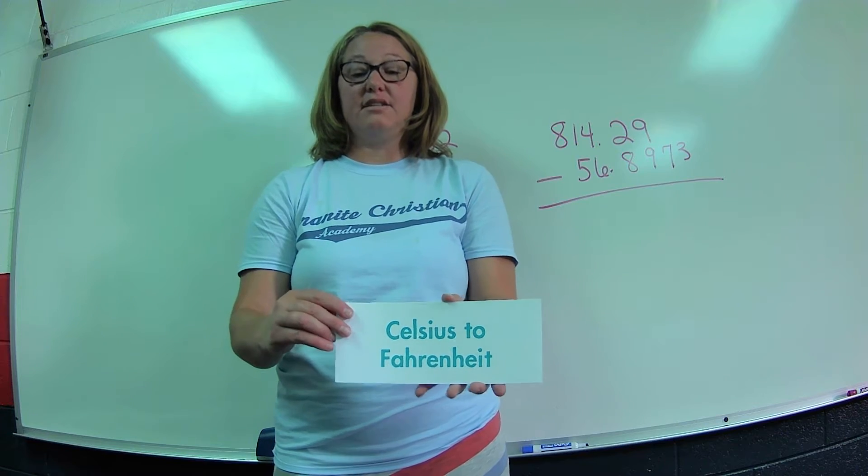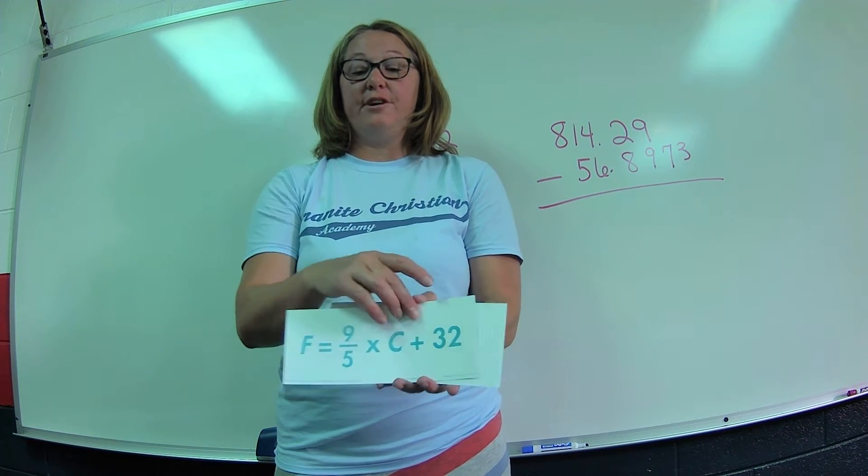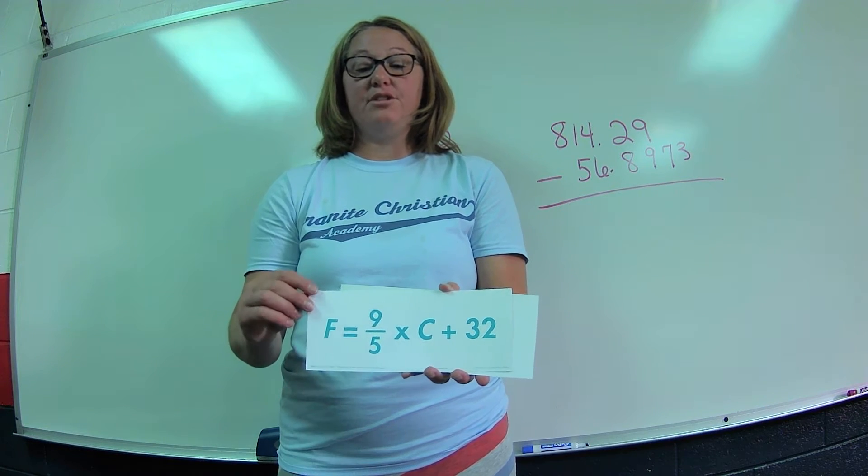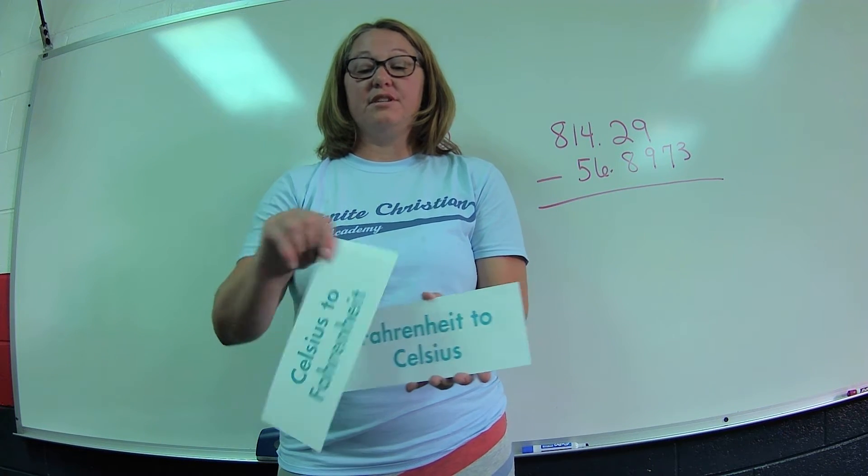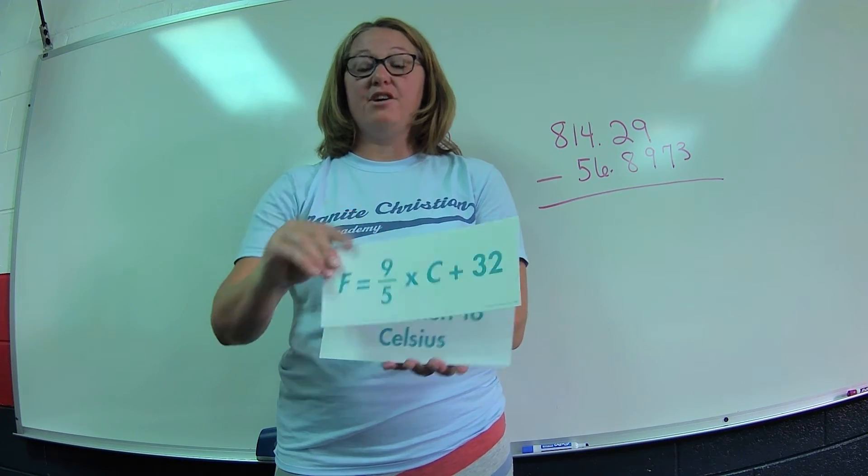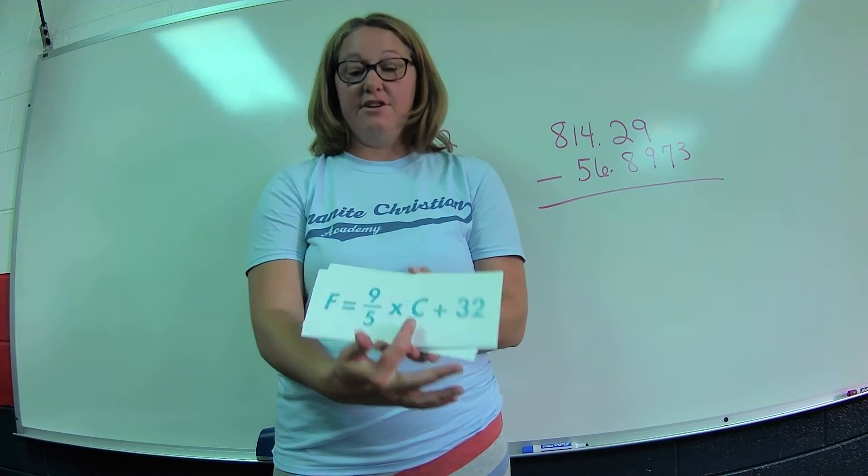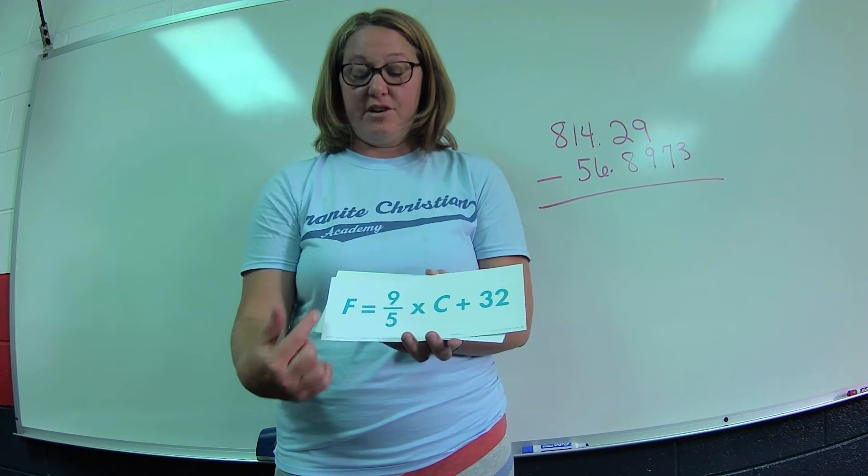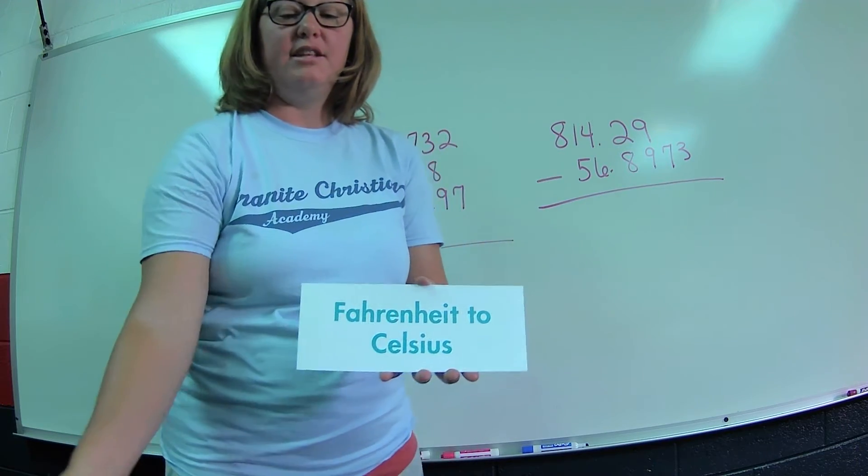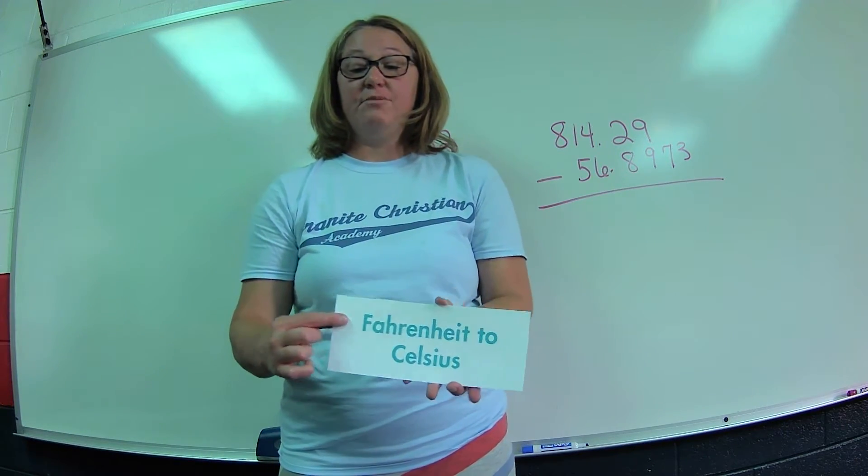Now we have these formulas that we practiced. Celsius to Fahrenheit: F equals nine-fifths times C plus 32. So when they give us the Celsius value, we'll put it here at the C, and Fahrenheit F equals nine-fifths times C plus 32.